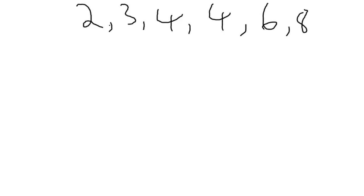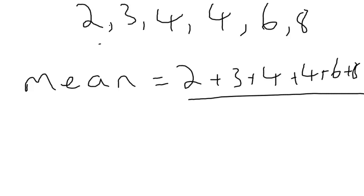The most common way to express the central tendency is with the mean, and the mean is just the sum of all the values divided by the number of values. So this would be 2 plus 3 plus 4 plus 4 plus 6 plus 8. And there are 1, 2, 3, 4, 5, 6 values, so we divide by 6, that gives us an answer of 4.5.